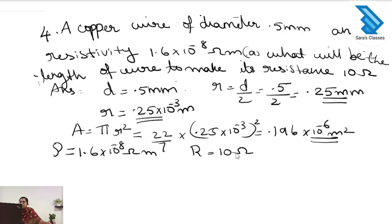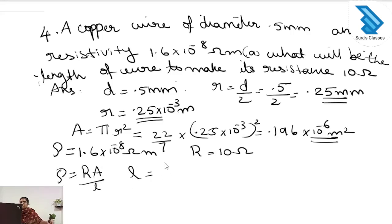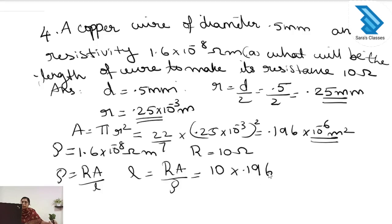To find the length of the wire, from the relation rho = R·A/L, we get L = R·A divided by rho. The resistance is 10, the area is 0.196 × 10⁻⁶, and rho is 1.6 × 10⁻⁸.